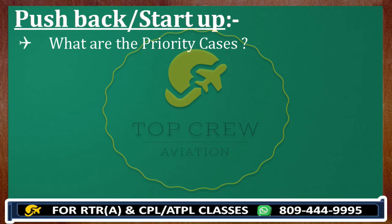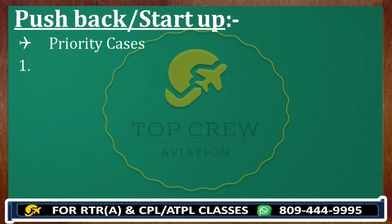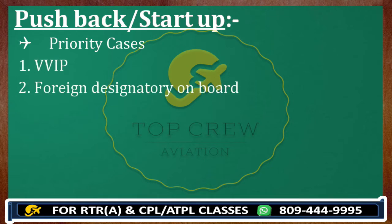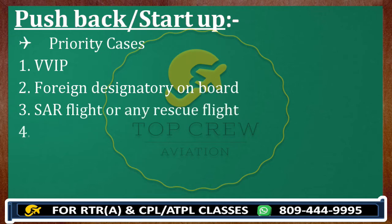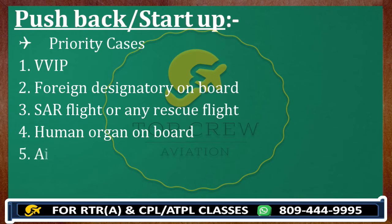The priority cases are: number one, VVIP; number two, if any foreign dignitary is on board; and search and rescue flight or any rescue flight. In case of human organ on board, or in case of air ambulance. So these are the major things for priority.